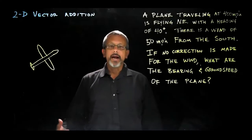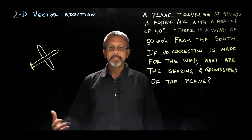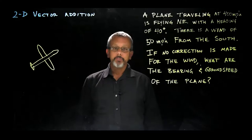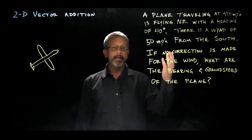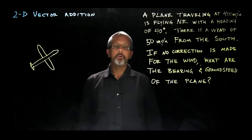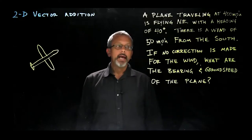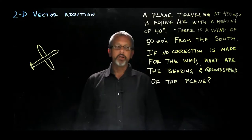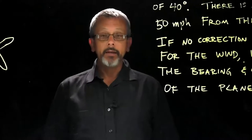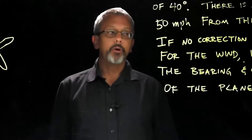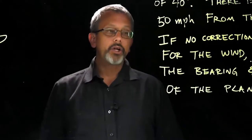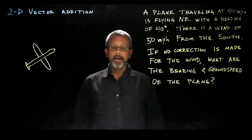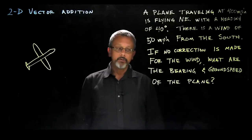Now let's consider an aerospace example of vector addition in two dimensions. We're going to consider a plane traveling at 400 miles per hour, flying northeast with a heading of 40 degrees. There is a wind of 50 miles per hour from the south. If no correction is made for the wind, what are the bearing and the ground speed of the plane?